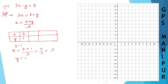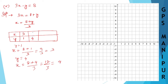Let us take y as 4. So x will be equal to 8 plus 4 divided by 3, which is 12 divided by 3, which is 4. So when y is equal to 4, x is also 4. You can try any other number as well.